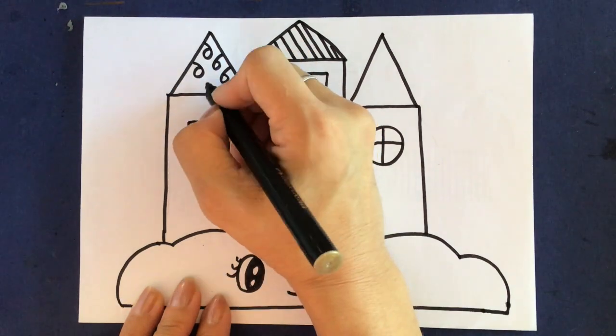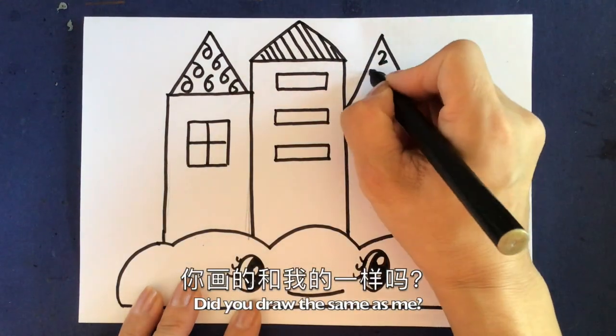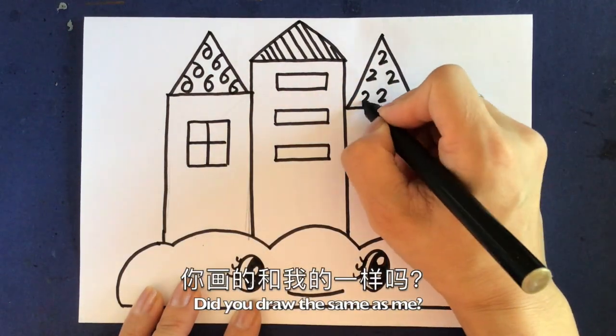现在我来装饰这两个房顶。Now, I'm going to decorate these two triangle roofs. 你画得和我一样吗? Did you draw the same as me?